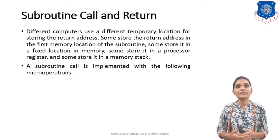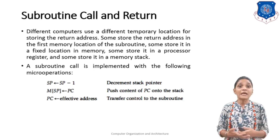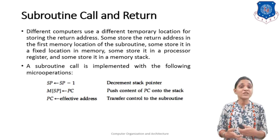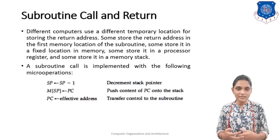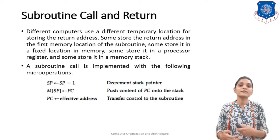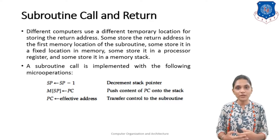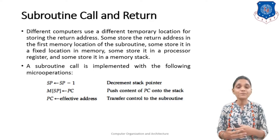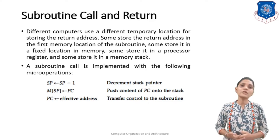A subroutine call is implemented with the following micro-operations if you are using stack memory. First, you require to store the return address, so you decrement the stack pointer by one so that you can store at the top of the stack. Then at that location given by the stack pointer you store the program counter, and lastly you change the effective address where your subroutine is stored into the program counter, so that from that new location your instructions can be executed.